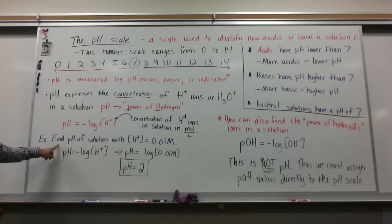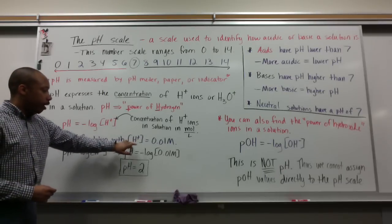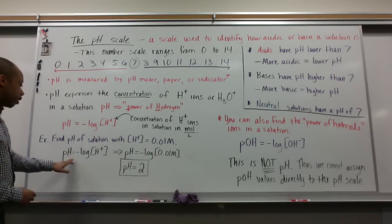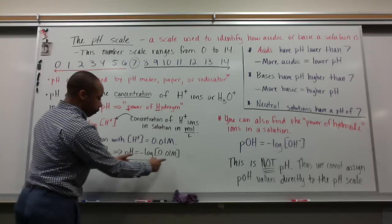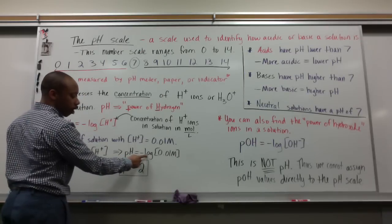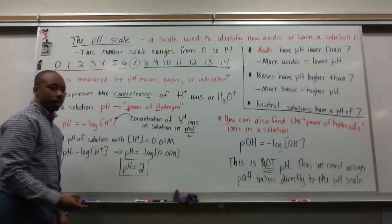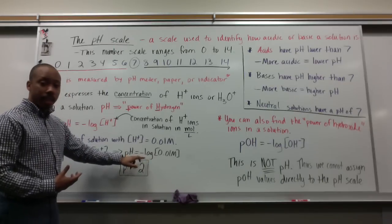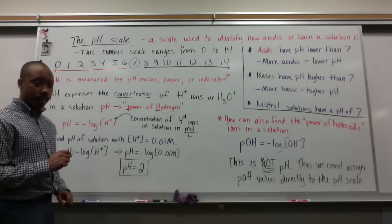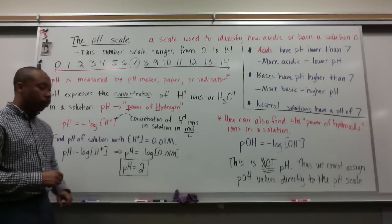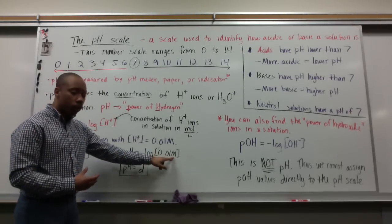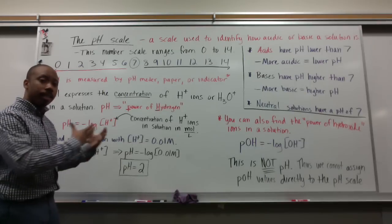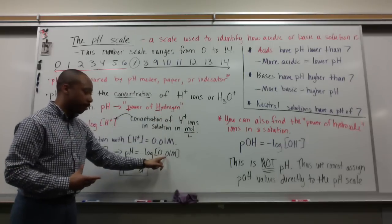Here is a sample problem. Find the pH of a solution with a hydrogen ion concentration of 0.01 molar. You just plug this into a calculator. Here's the equation: pH equals negative log of 0.01 molar. Once you do this, you'll get a pH equal to 2. So a solution with 0.01 molar concentration of hydrogen ions has a pH of 2, which is acidic.